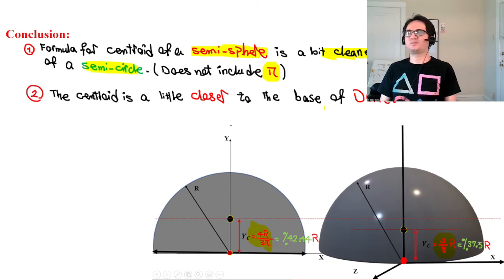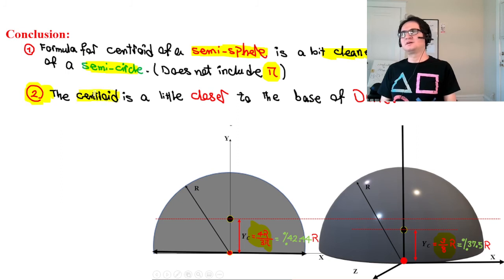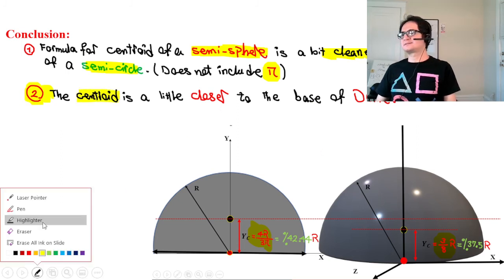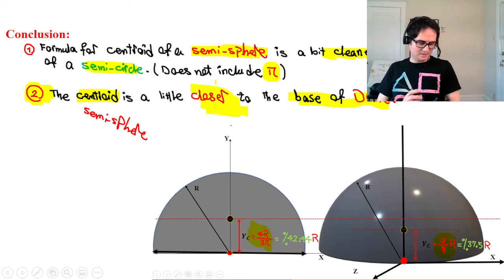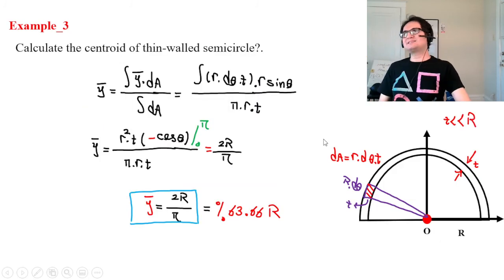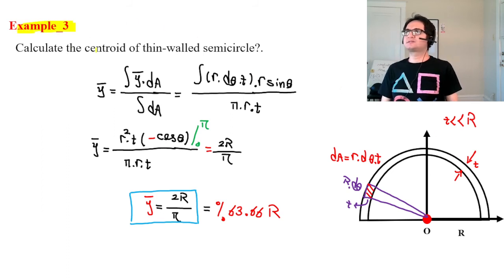The centroid of the semi-sphere is closer to the base of the dome compared to the 2D case, due to more weight concentrated near the dome pulling the centroid downward.